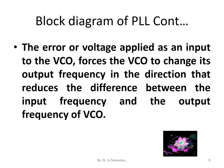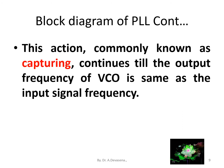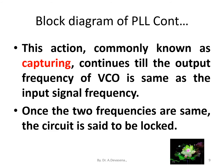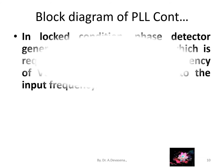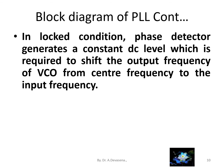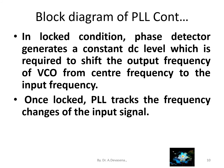The error voltage applied as an input to the VCO forces the VCO to change its output frequency in the direction that reduces the difference between the input frequency and the output frequency of the VCO. This action, commonly known as capturing, continues till the output frequency of the VCO is the same as the input signal frequency. Once the two frequencies are the same, the circuit is said to be locked. In the locked condition, the phase detector generates a constant DC level which is required to shift the output frequency of VCO from the center frequency to the input frequency.